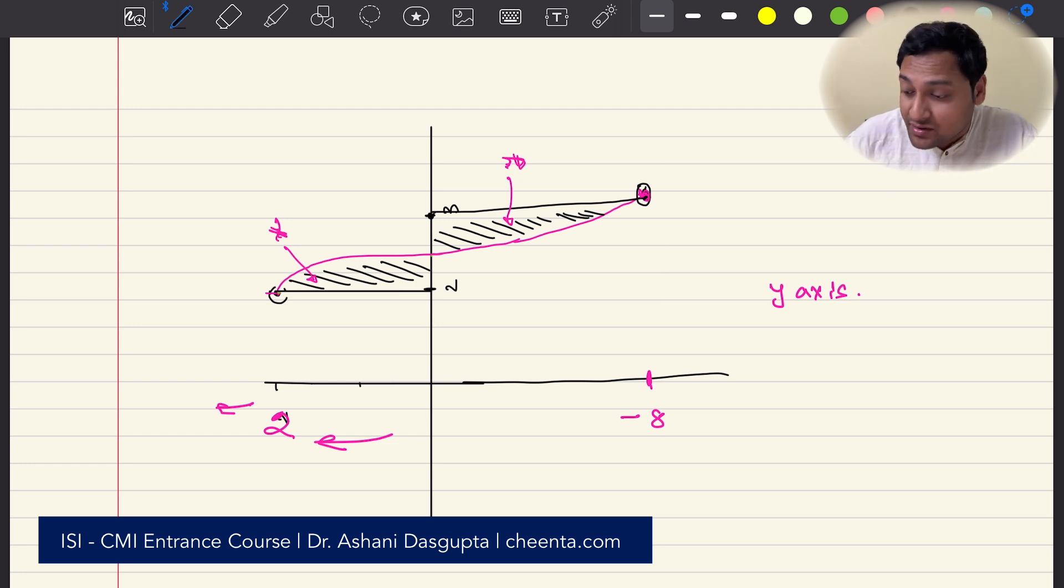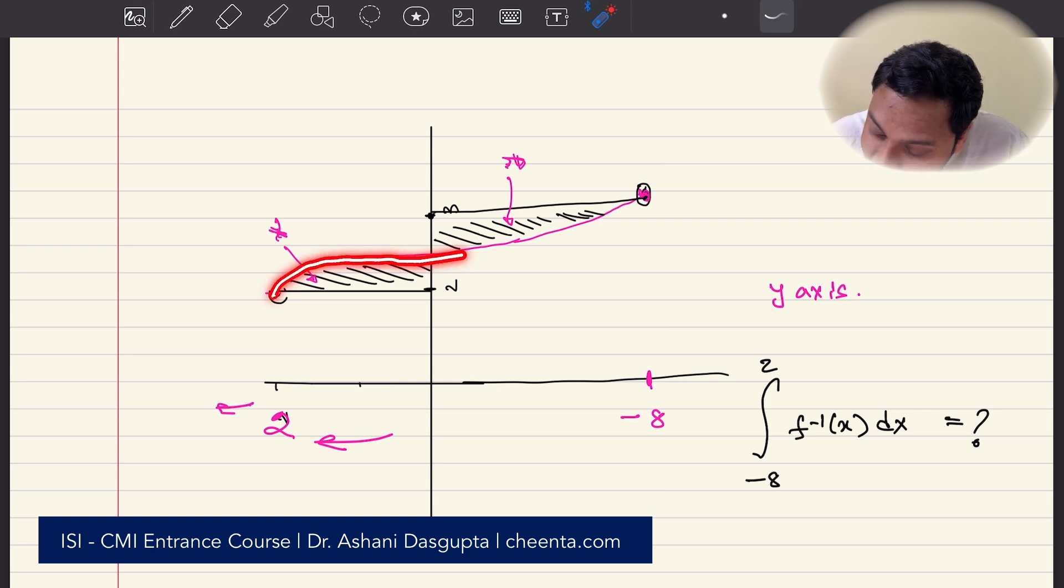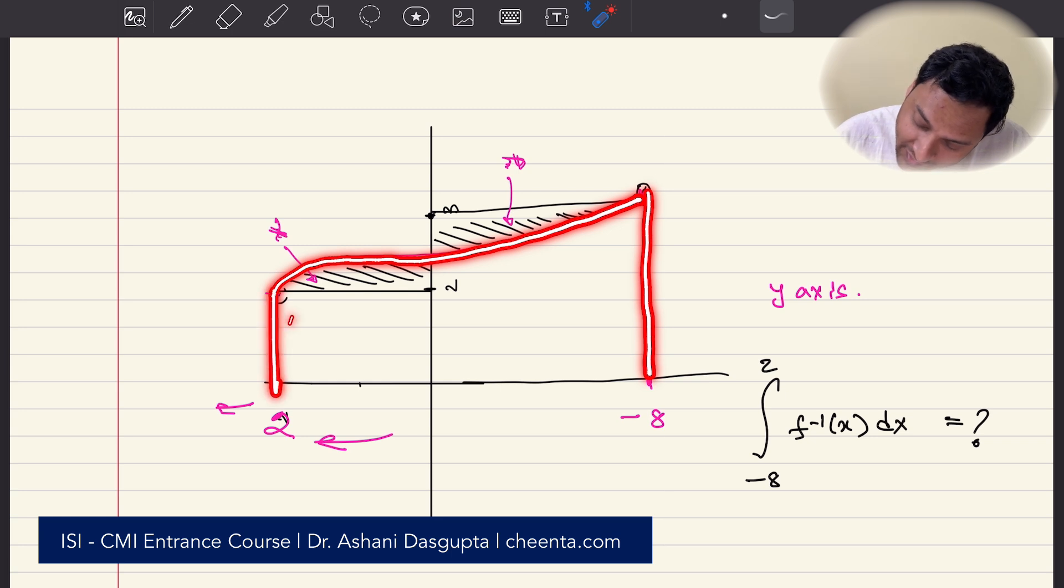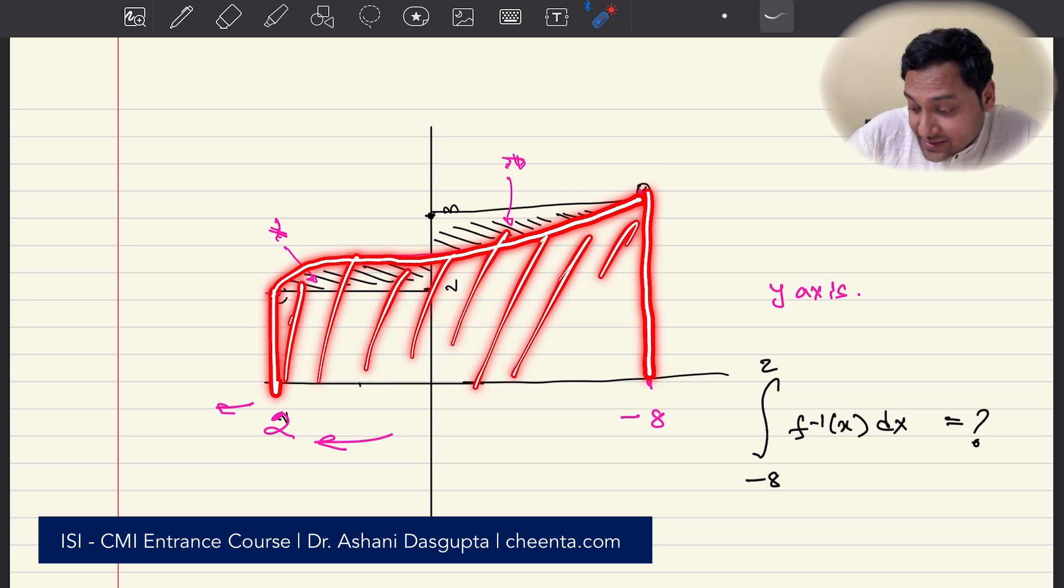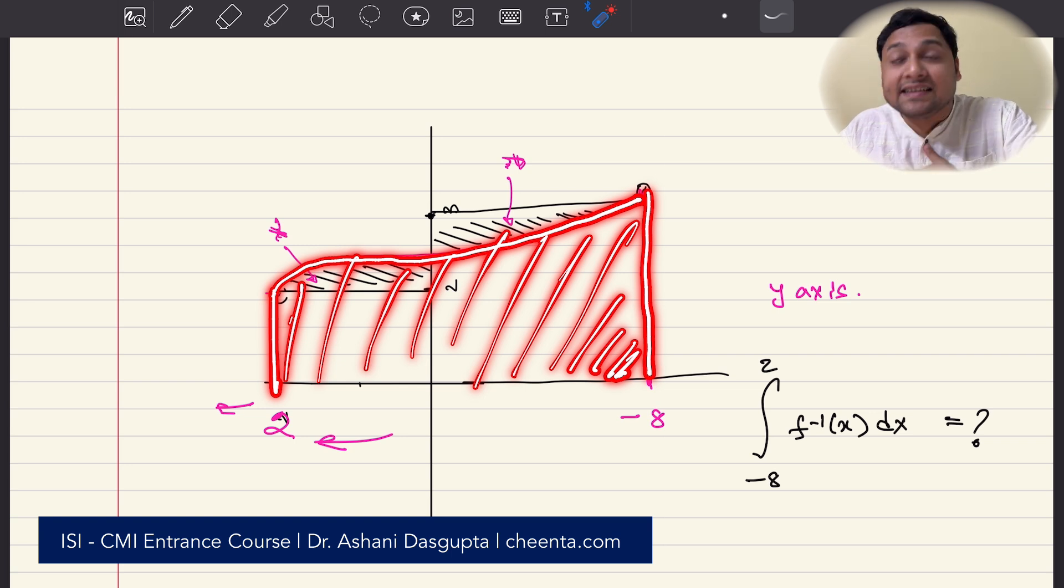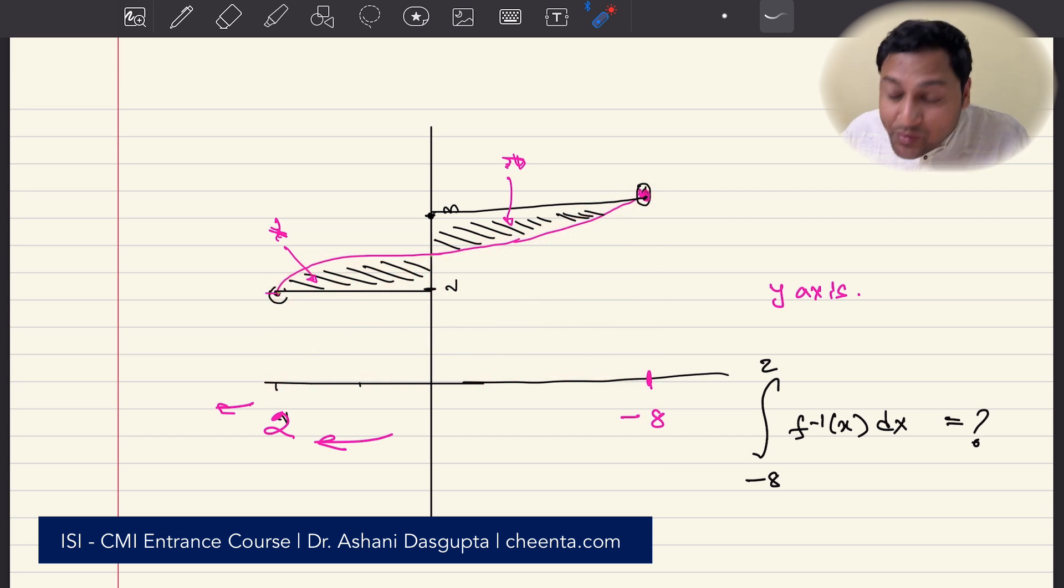Okay, now that we have that, what do we want? We want the integral of f inverse x dx from negative 8 to 2. What is this quantity? That's what we want. So, we want the area under this particular curve. So, we want this area. And the entire area is positive because it is above the y-axis. It is above the y-axis. So, we want to find out this area. So, how do we go about it? It's actually pretty simple.